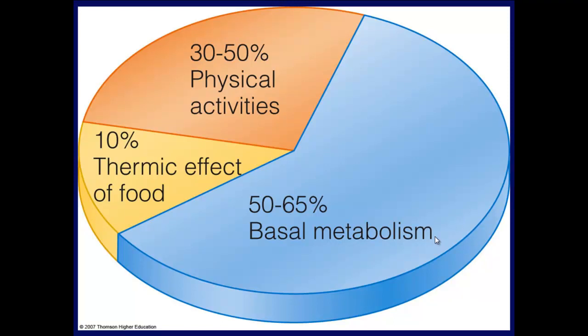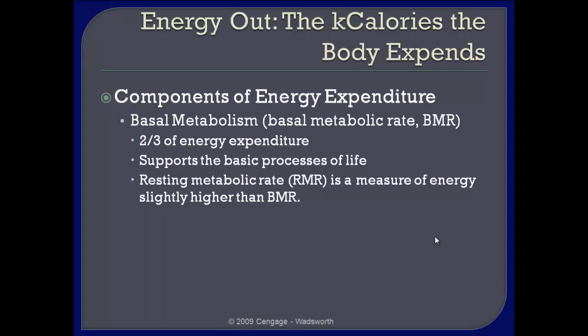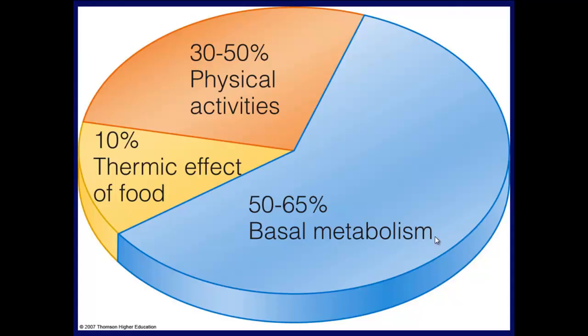In figure 8-4, you're going to see a breakdown of normal caloric expenditure. About 50 to 65% of caloric expenditure on a given day is going to be from basal metabolism — that's just the body taking care of business: providing energy to the brain, providing energy for smooth muscle tissue to contract and move food through the gastrointestinal system. About 10% is the thermic effect of food, and 30 to 50% is physical activities. Of course, that number can go significantly higher, or it can be very low if a person is truly sedentary.